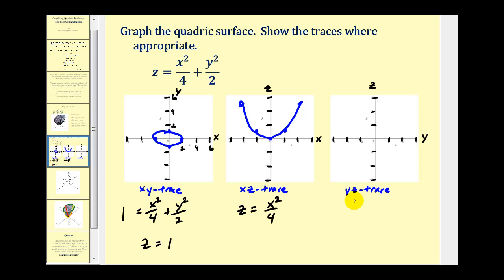And to determine the yz trace, we'll set x equal to zero. That'll give us the equation z equals y squared over two. Again, notice we have another parabola. Now when y is equal to two, we'll have two squared divided by two. So the point two, two is on this graph, as well as the origin and the point negative two, two.